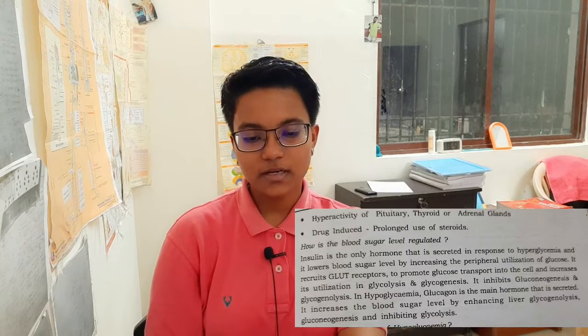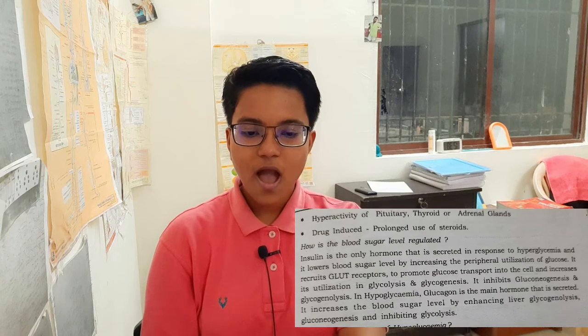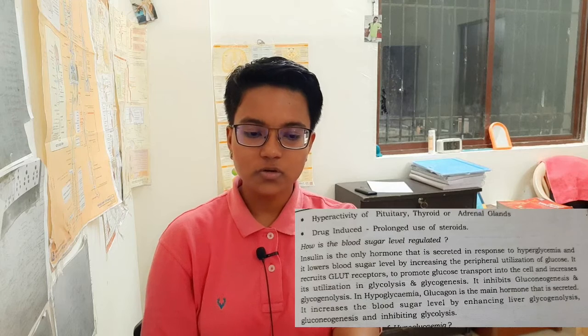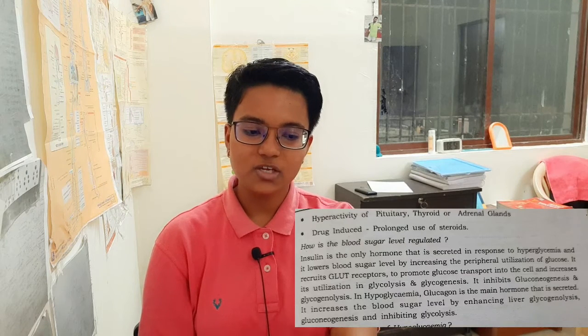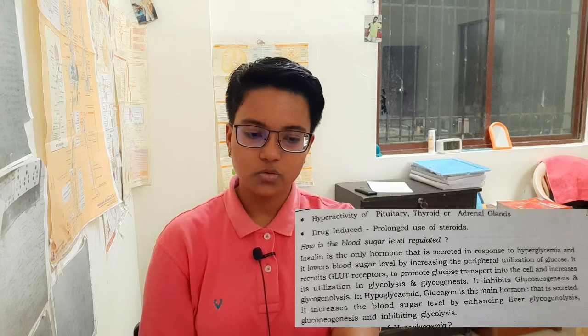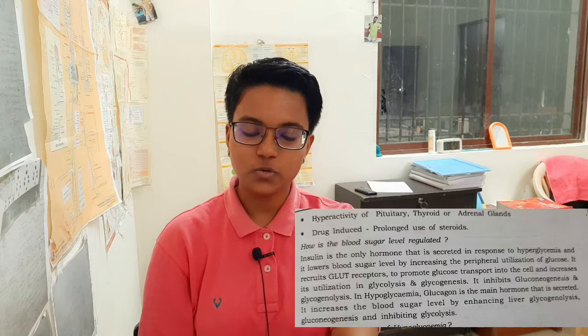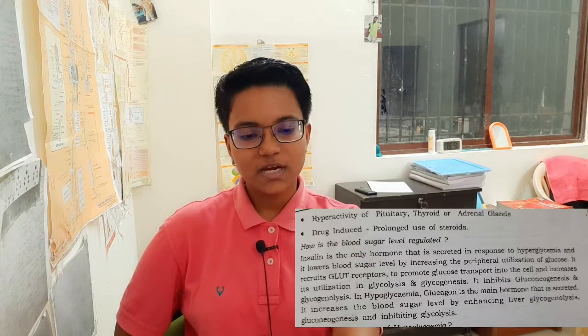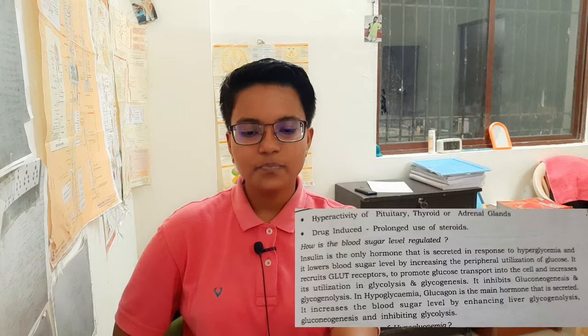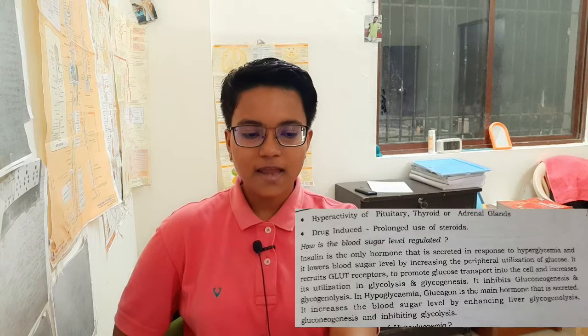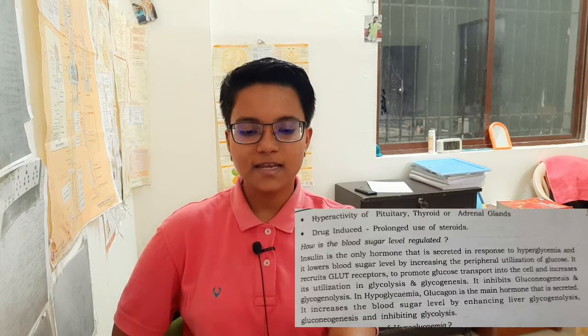What are the causes of hyperglycemia? Diabetes mellitus, hyperactivity of pituitary, thyroid or adrenal glands, and drug-induced or prolonged use of steroids. How is blood sugar level regulated? Insulin is the only hormone secreted in response to hyperglycemia; it lowers blood glucose by increasing peripheral utilization of glucose, recruits glucose receptors to promote glucose transport into the cell, increases its utilization in glycolysis and glycogenesis, and inhibits gluconeogenesis and glycogenolysis. In hypoglycemia, glucagon is the main hormone secreted; it increases blood sugar by enhancing liver glycogenolysis and gluconeogenesis, and inhibiting glycolysis.